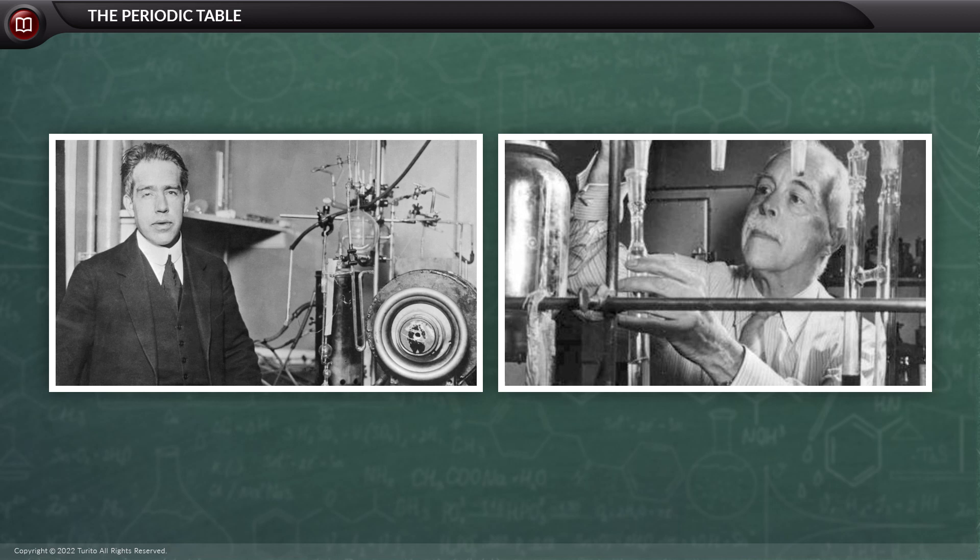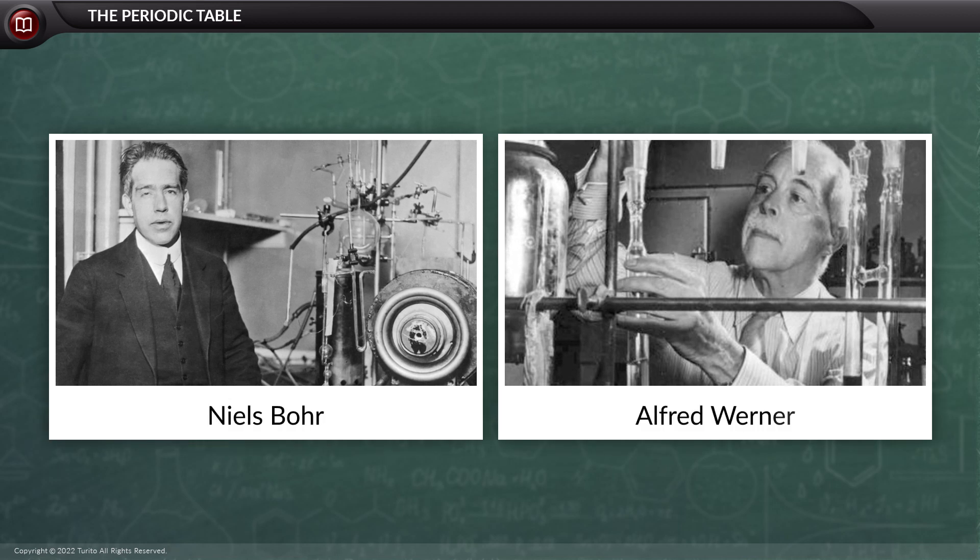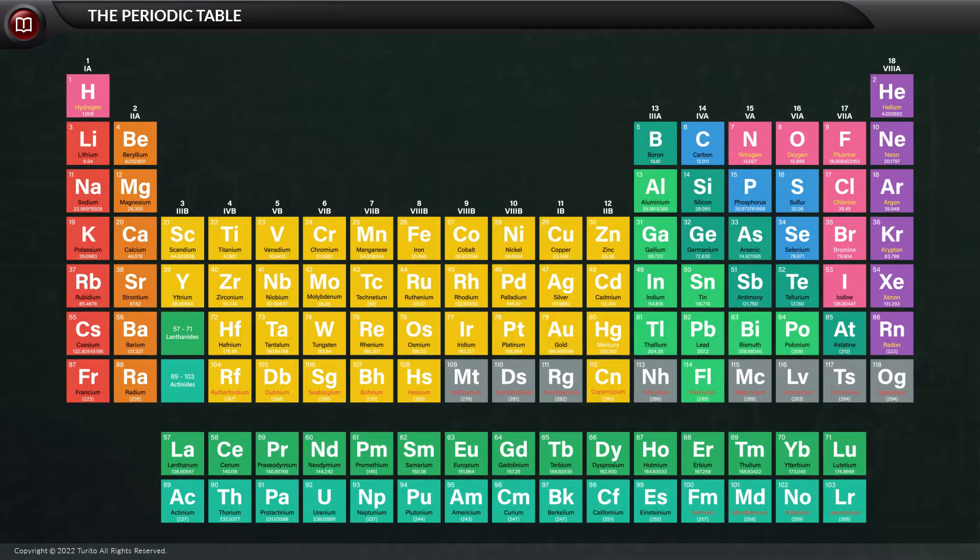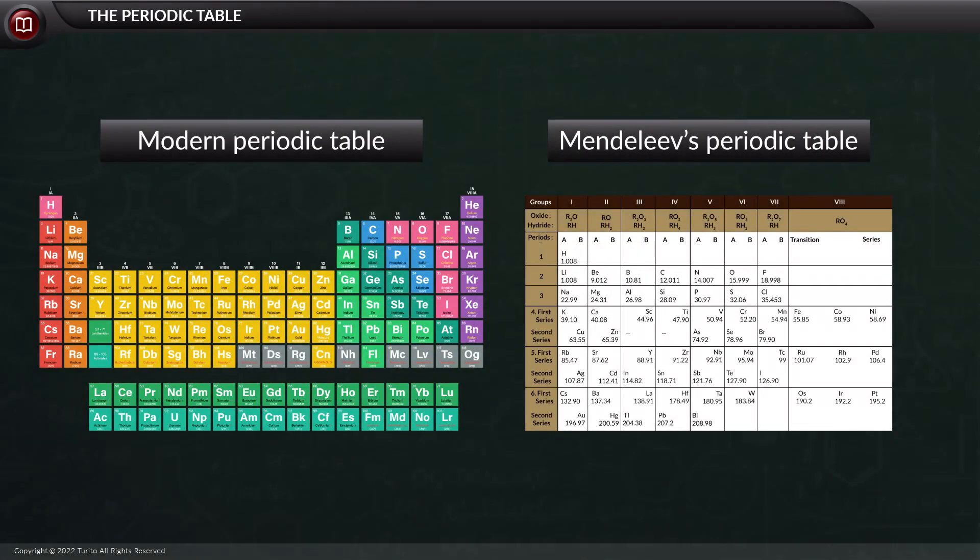A group of scientists, like Niels Bohr, Alfred Werner, and others, conducted studies and came up with a modern periodic table or long form of the periodic table. The modern periodic table has the maximum inspiration from Mendeleev's periodic table.